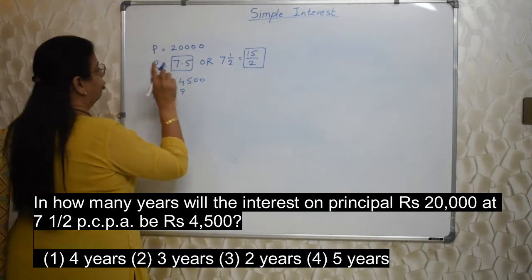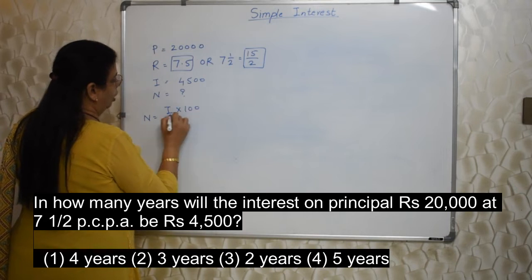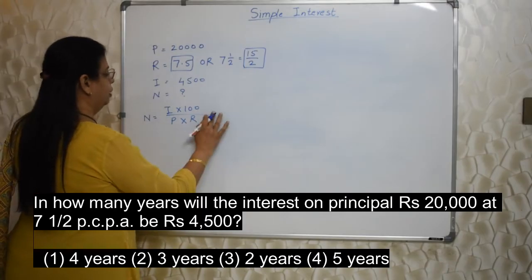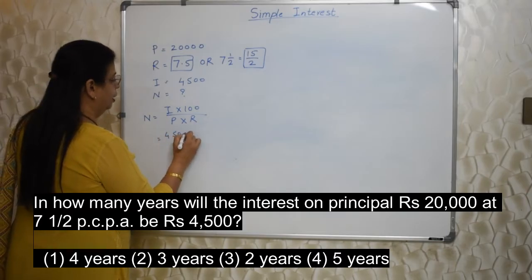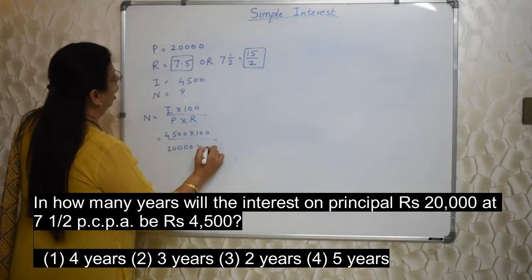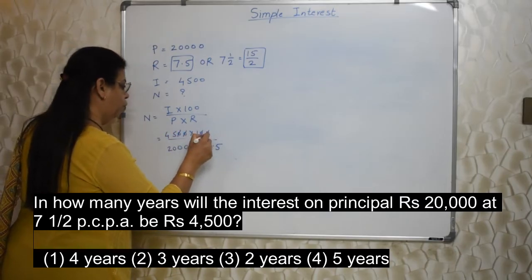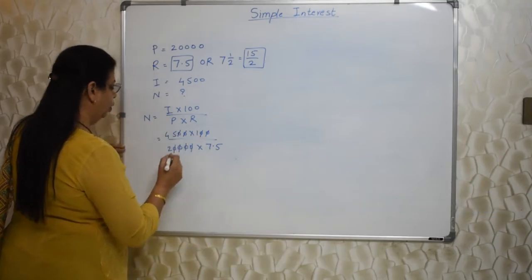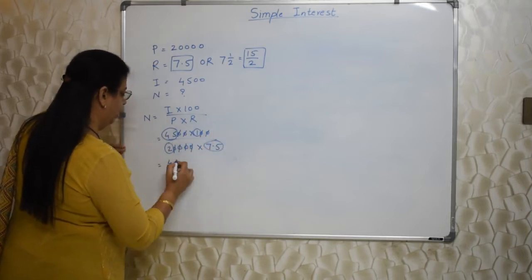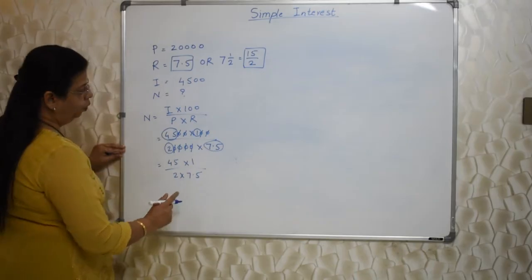Let's do it with 7.5 first. What is the formula to find out N? N is I into 100 upon P into R. So let's put the information. I is 4,500 into 100 upon P is 20,000 into R is 7.5. First let's cancel the zeros. 1, 2, 3, 4. 1, 2, 3, 4. What is remaining is 45 here, 1 here, 2 here and 7.5 here. So I am rewriting it upon 2 into 7.5. Now I don't want this decimal.